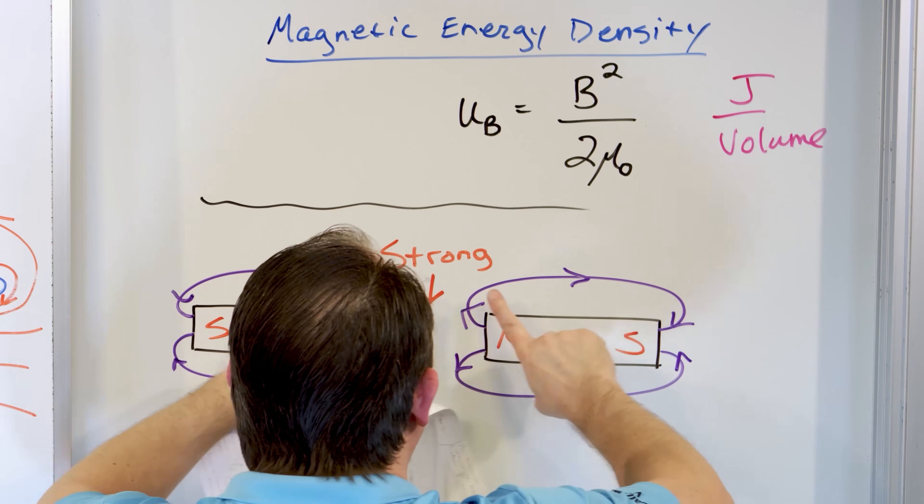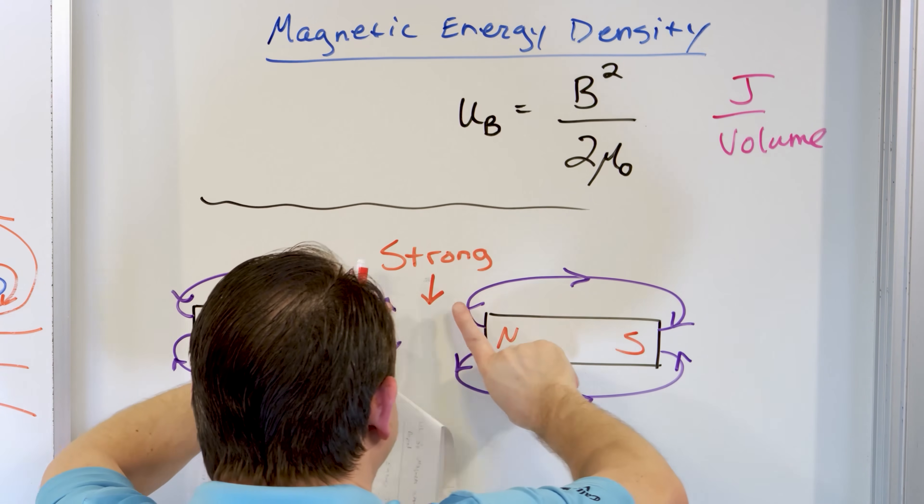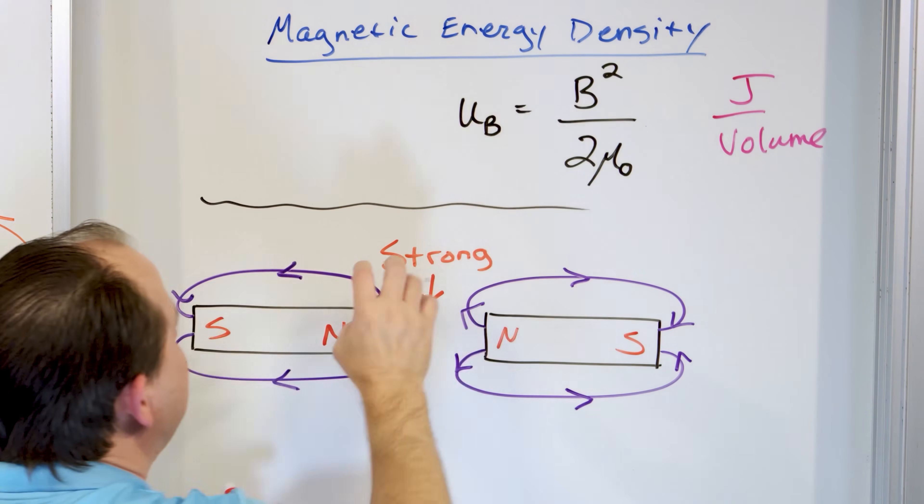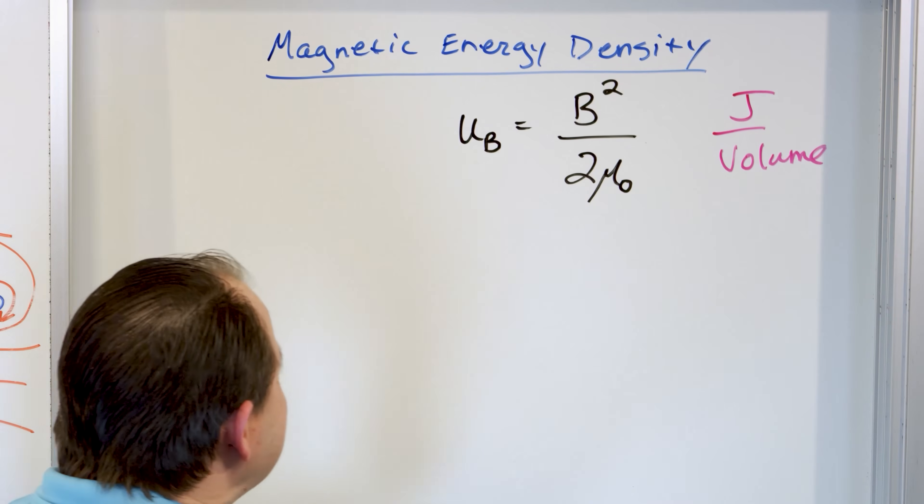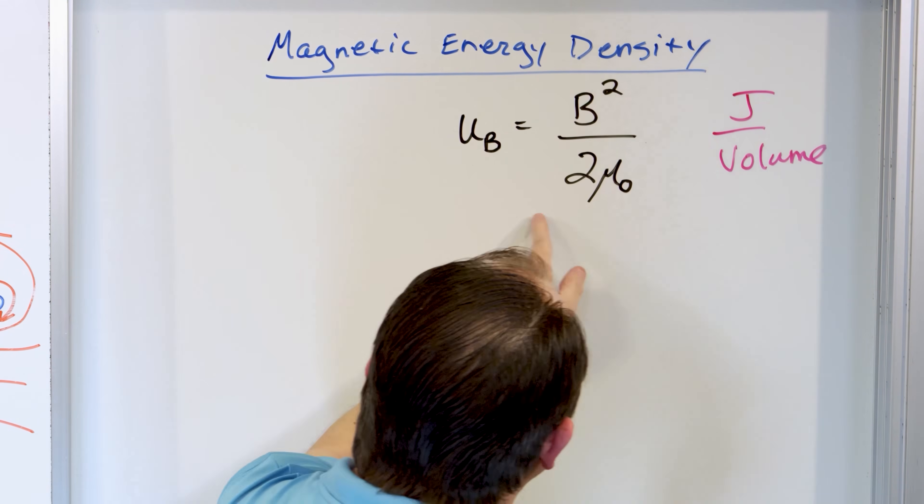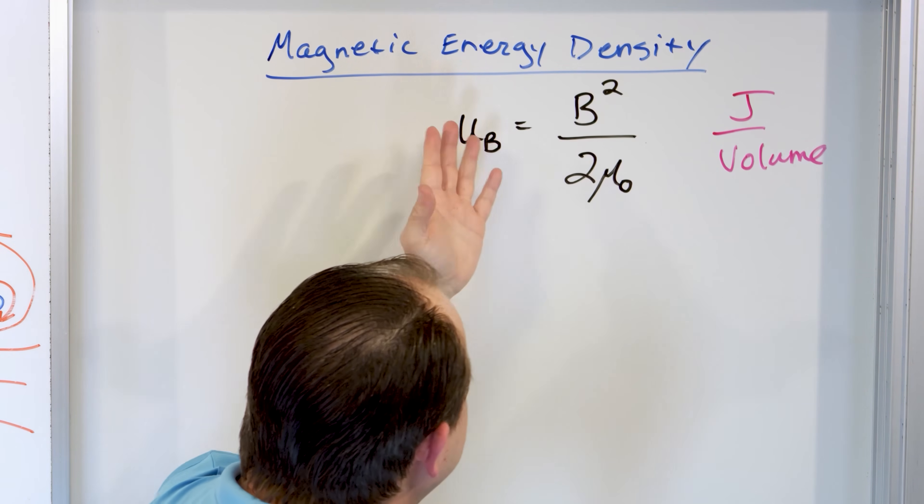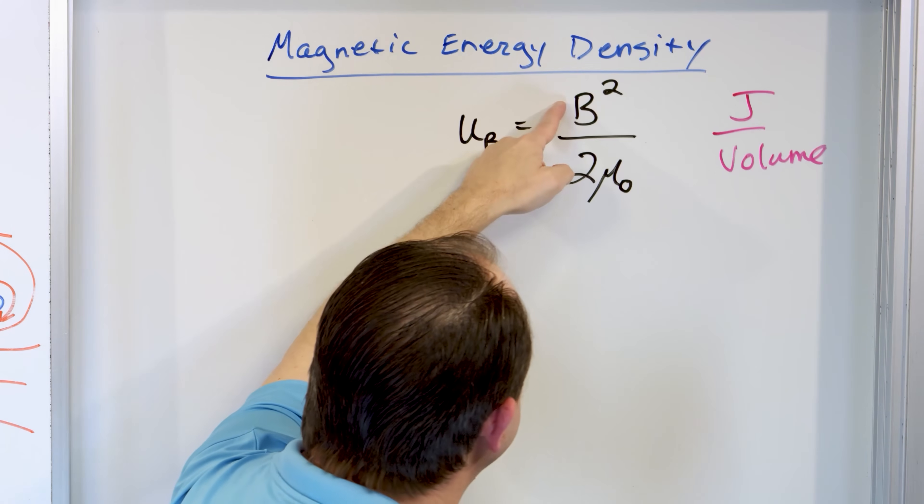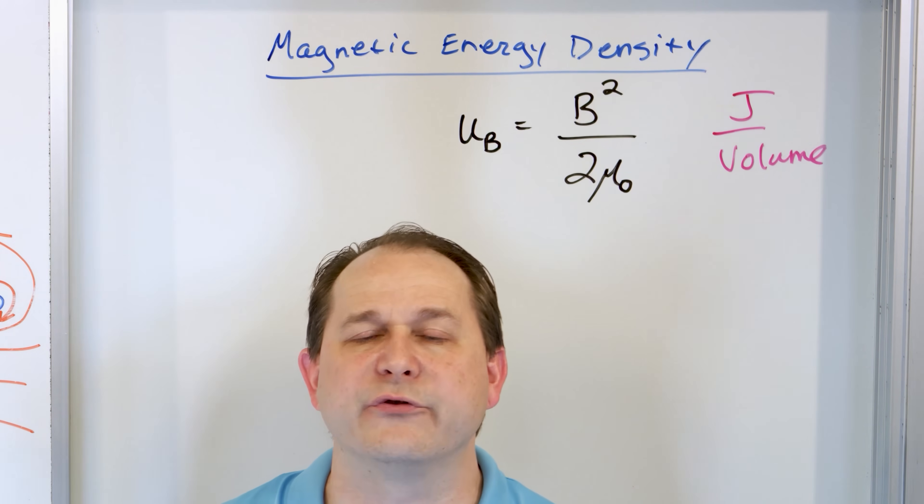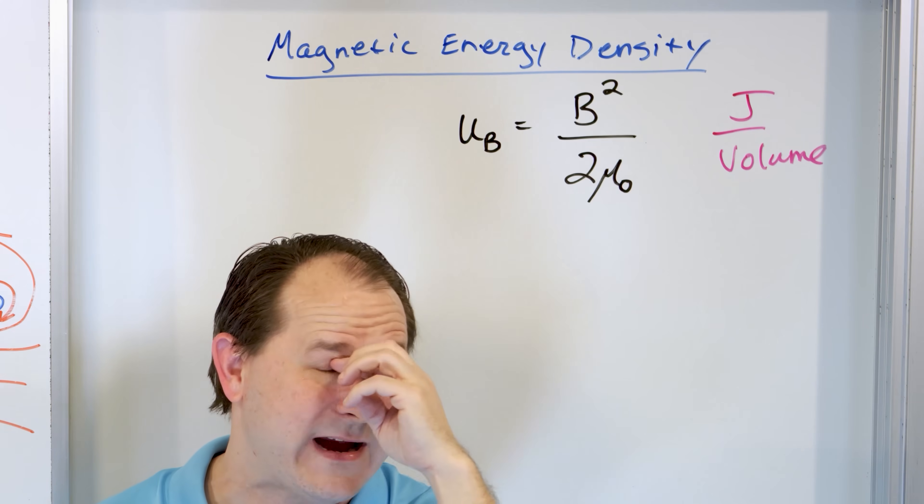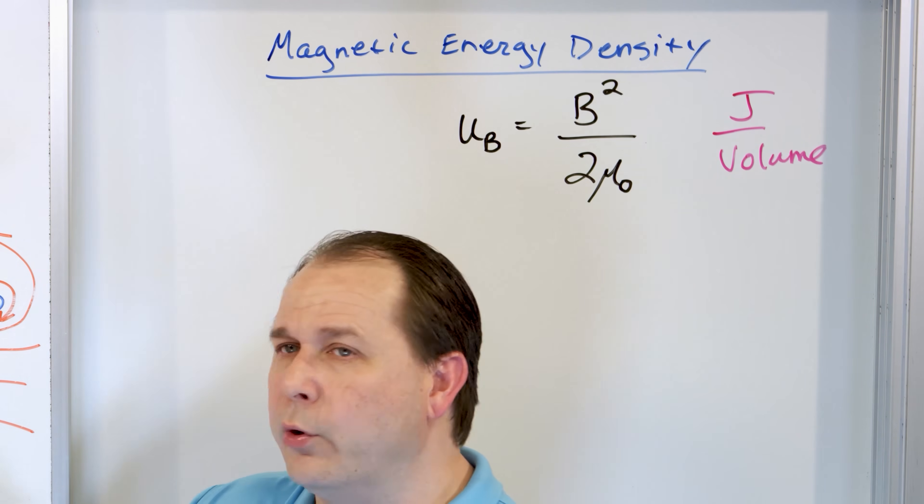Because you can see they're sort of pointed not exactly in the same direction but as they get closer together they're going to be more and more if you can think about the ones coming this way they're going to be aligned up more and more and it's going to get very very strong magnetic field in the center. So the magnetic field you square it and then you divide by two numbers this is a number and this is a number so basically the energy density is just related to the magnetic field strength squared. The higher the magnetic field the more energy it stores right.